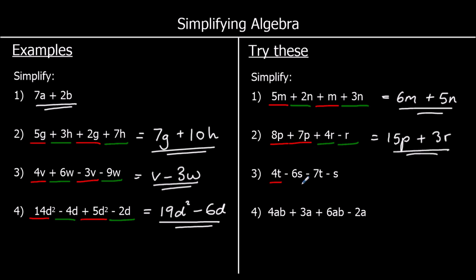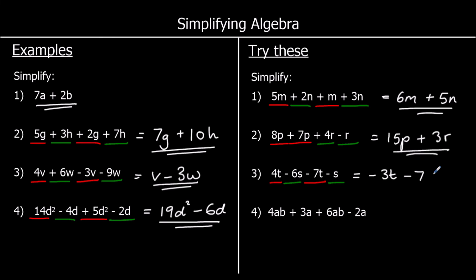Question 3: we've got t terms and s terms, always taking the sign from in front of the term. For t: 4t take away 7t — 4 take away 7 is negative 3, so negative 3t. For s: negative 6s take away 1s — negative 6 take away 1 is negative 7, so negative 7s. The answer is negative 3t take away 7s.